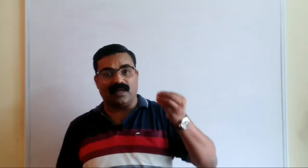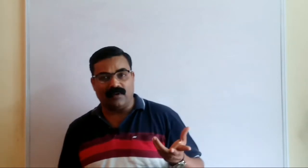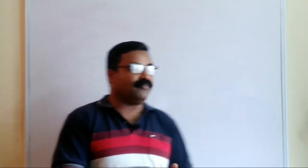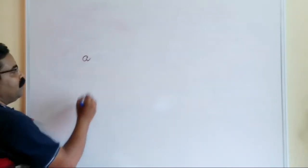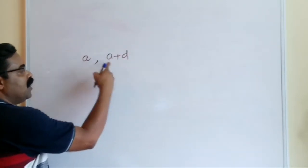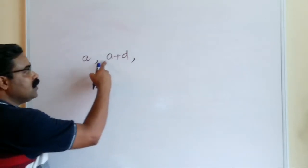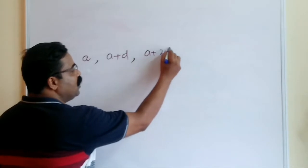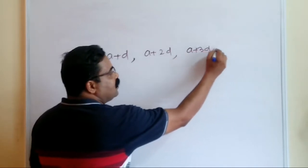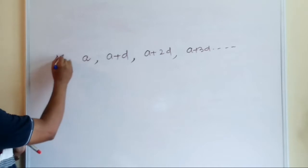We will focus on the important things we need to remember from this chapter. Arithmetic progression is nothing but a sequence in which, except the first term, all other terms are obtained when you add a fixed constant to the previous term. For example, if I write a sequence where the first term is 'a' and I add common difference 'd', I get the next term a+d, then a+2d, a+3d, and so on.